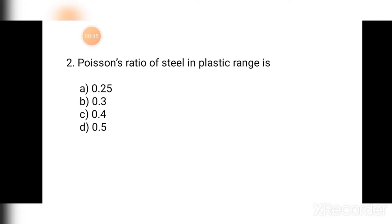Question number two: Poisson's ratio for steel in the plastic range is — (a) 0.25, (b) 0.3, (c) 0.4, (d) 0.5. If you observe the stress-strain curve for mild steel, in the plastic range there is much more extension and the value of μ is higher. In the plastic range, Poisson's ratio is 0.4, hence the correct answer is (c) 0.4.